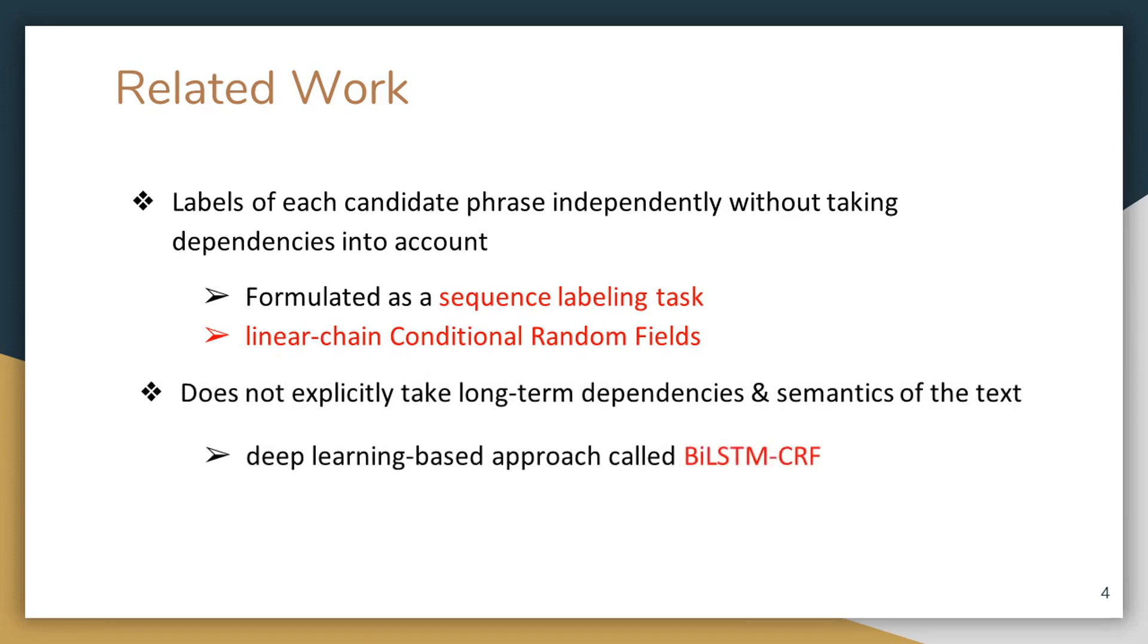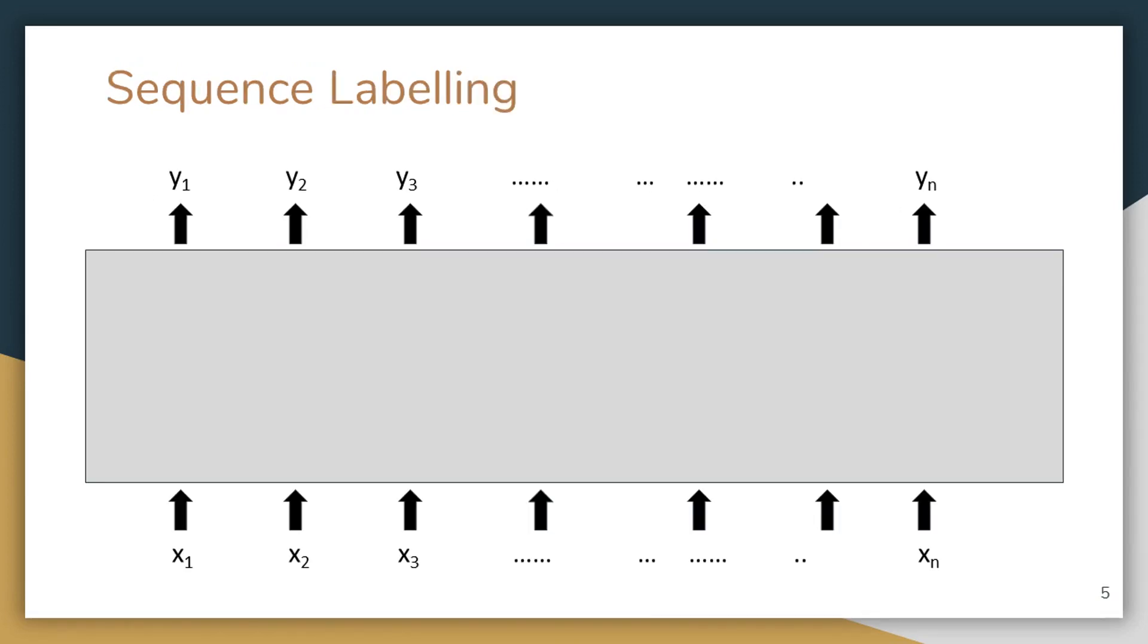Let me give you an overview of what this means. It's called sequence labeling because we are given a sentence which consists of words x1 to xn for which we need to predict the labels y1 to yn. Each label yi corresponds to word xi.